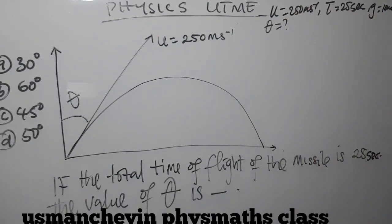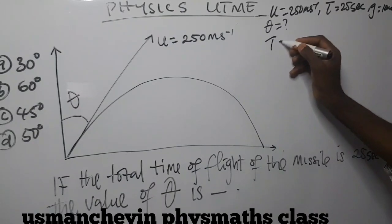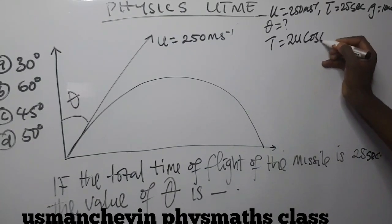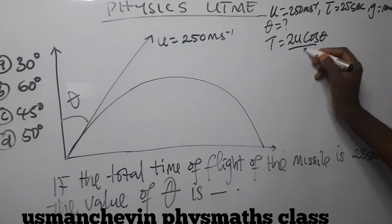And that is given by time of flight, T, is equal to 2U cos theta all over G.